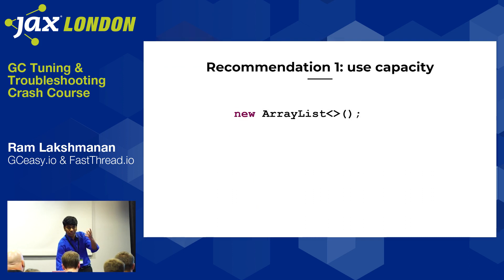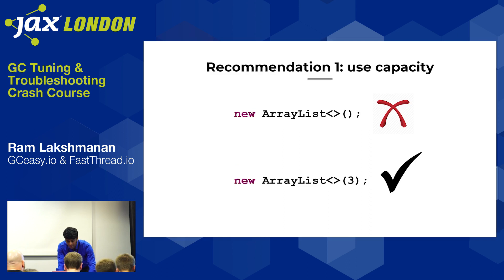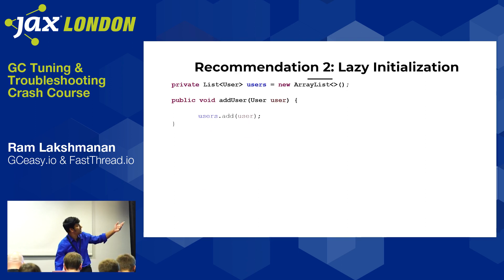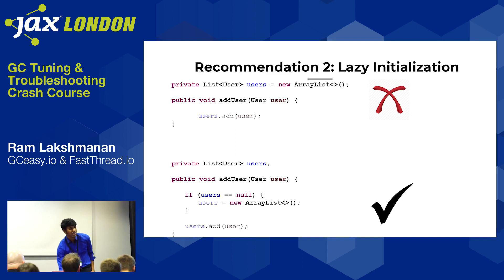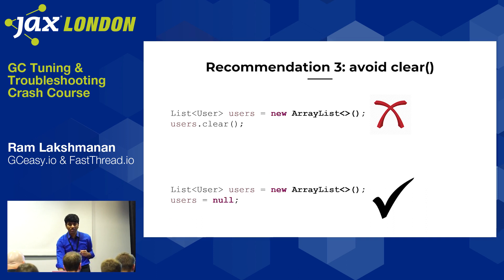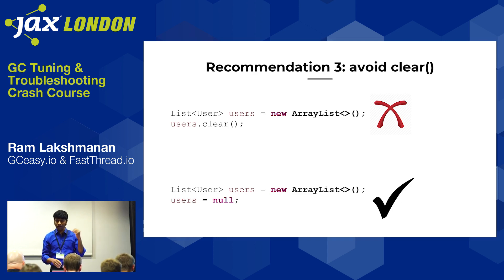Quick collection recommendations: instead of 'new ArrayList()', initialize with capacity — 'new ArrayList(3)' creates only a 3-element array. Use lazy initialization: check for null before creating the list, so you only create it if you actually need it. And instead of calling clear() on a list — which only removes elements but keeps the grown backing array in memory — set it to null instead.